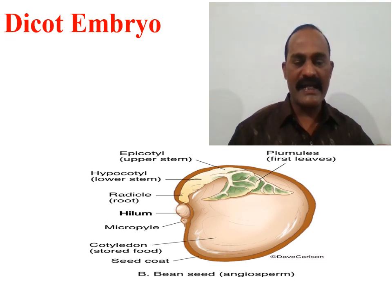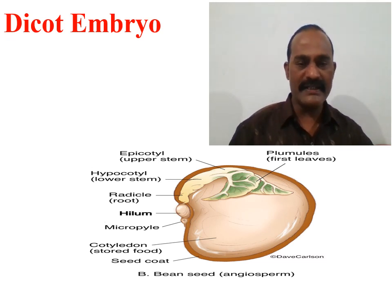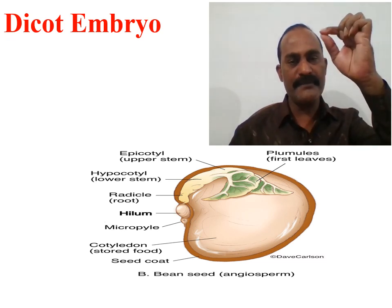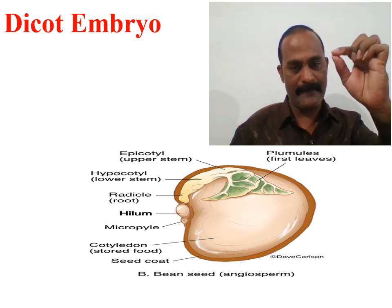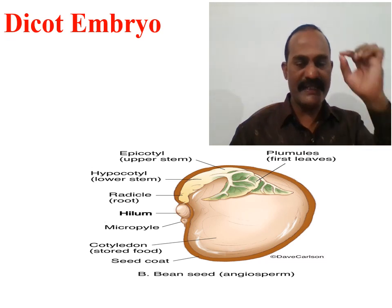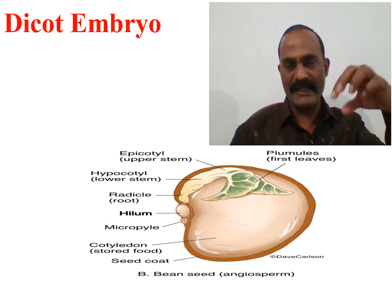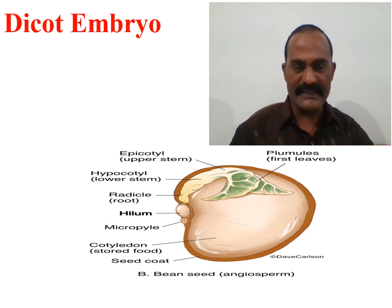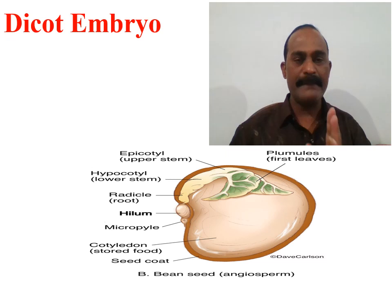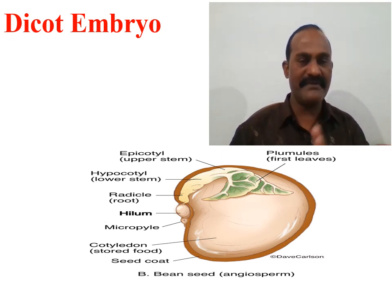In the dicot embryo, just above the micropyle the radicle is developing, connected to the cotyledon region and then the plumule. The embryonal axis has the plumule at the topmost position; the plumule has a region called the epicotyl, and just below that is the hypocotyl, followed by the radicle. The cotyledons are attached to the embryonal axis at the junction of epicotyl and hypocotyl, so the dicotyledonous embryo has an embryonal axis with epicotyl bearing the plumule and hypocotyl bearing the radicle.